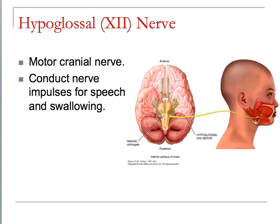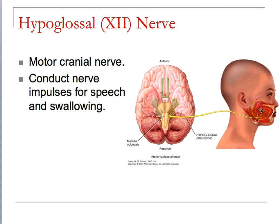The hypoglossal nerve — potentially the third or fourth most important cranial nerve — conducts nerve impulses for speech and swallowing. You can't eat and talk at the same time. Mother nature created an entire nerve, the hypoglossal nerve, to make sure that you don't do something foolish like try to eat and talk at the same time.